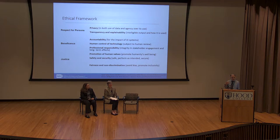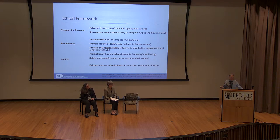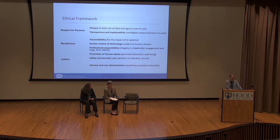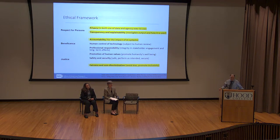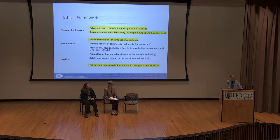It's more challenging to map these principles to AI and machine learning. On one level, this seems like extremely low-risk research — we're not even touching people. But there are very different considerations. In respect for persons, we think about privacy in data use and agency over its use, transparency and explainability for AI, accountability, and fairness and non-discrimination.